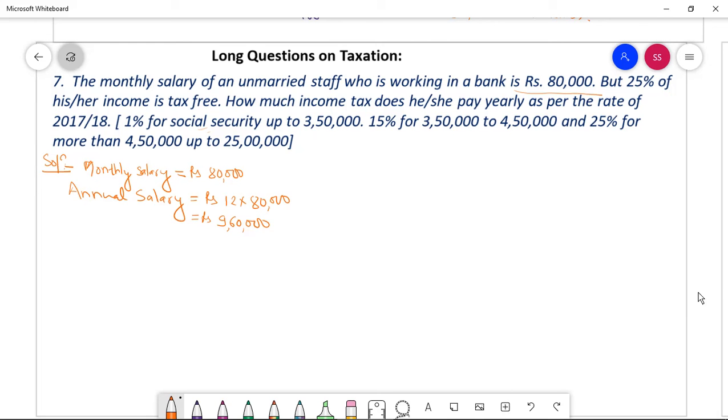Now 25% of income is tax-free. Now tax-free allowance equal to 25% of nine lakh 60,000. 25 over 100 times 960, 25 times 9600.